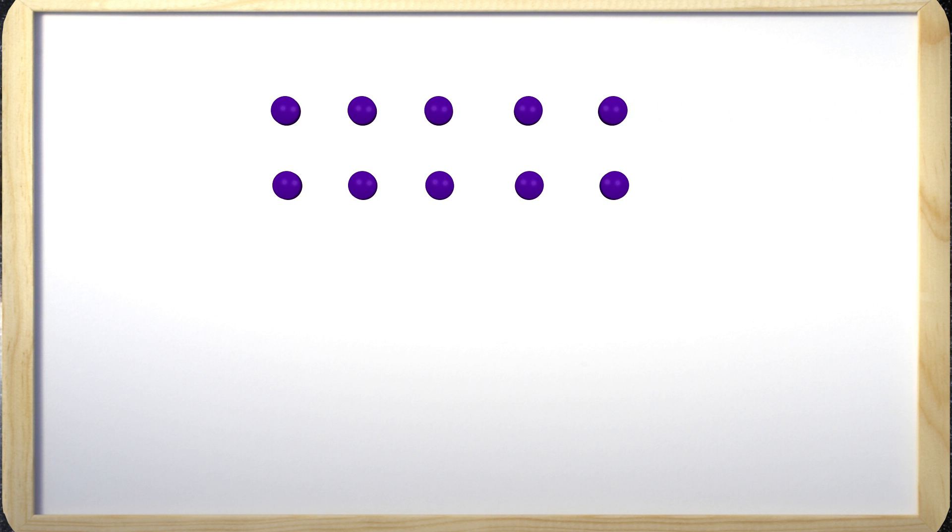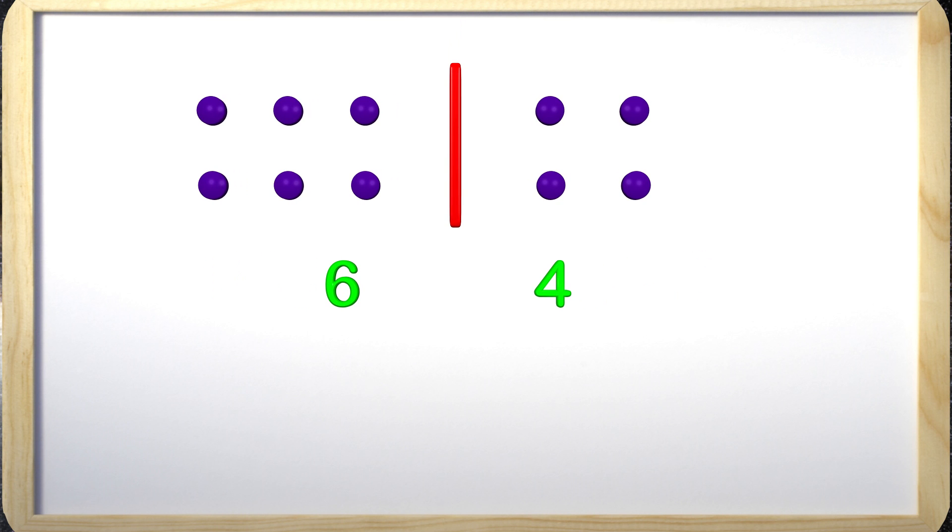Here is a group of circles to help us understand subtraction and addition. Let's separate these circles into two groups. On the left is a group of 6, and on the right is a group of 4. If we add the group of 6 and the group of 4, we will get 10, because that is what we started with.